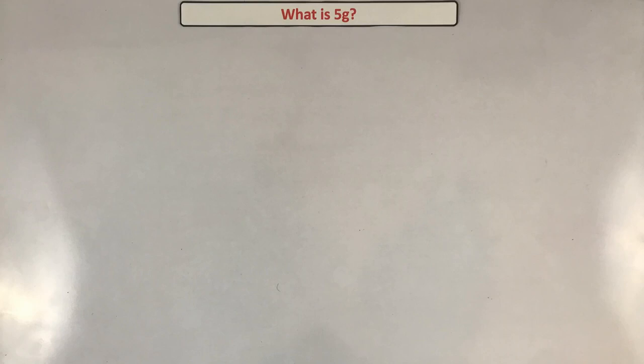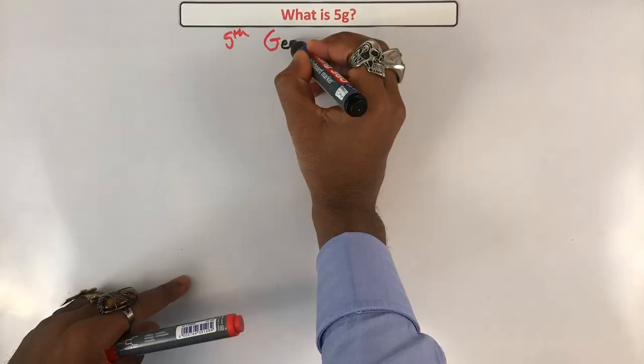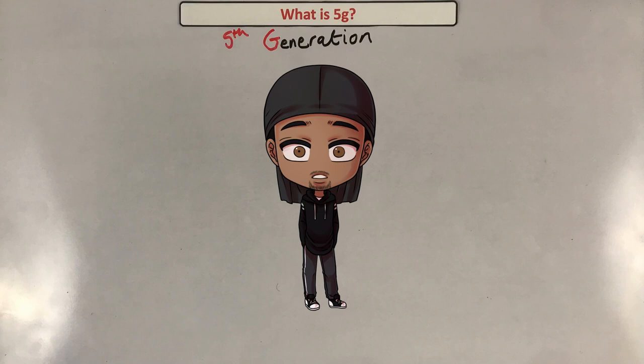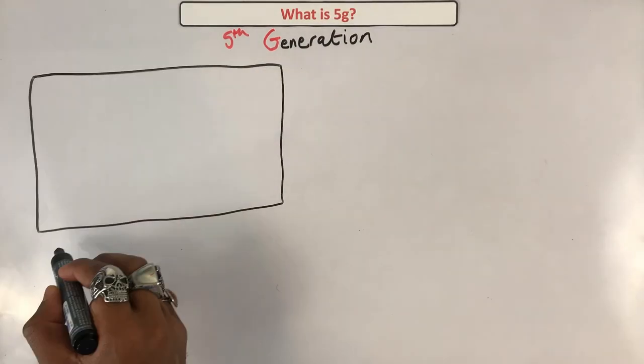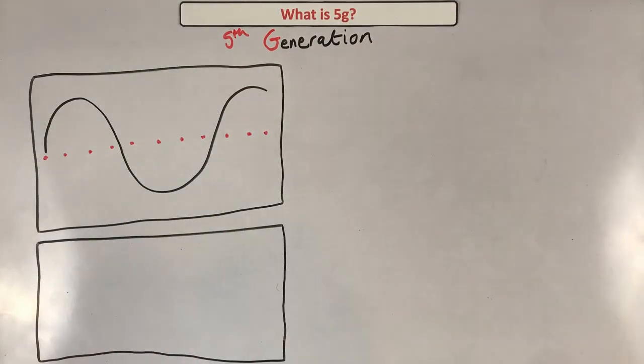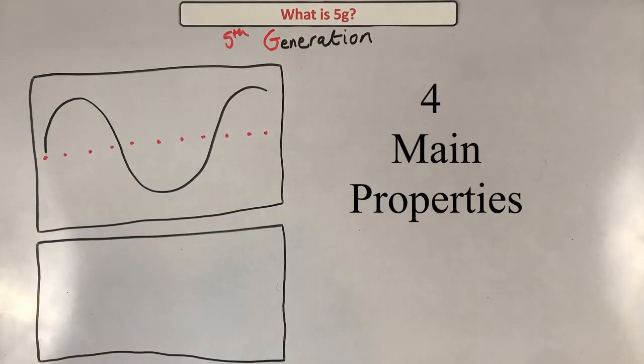What is 5G? 5G is the fifth generation of wireless communication. You're supposed to talk about the millimeter waves in it — tell the people the truth! Okay, first let's start with the basics of what a wave actually is.